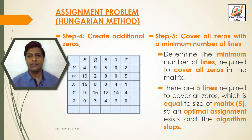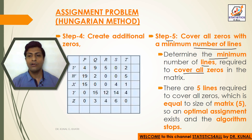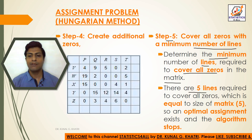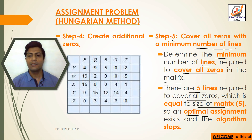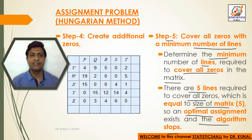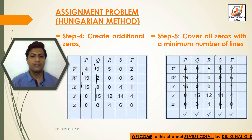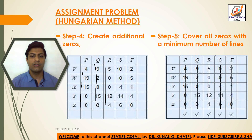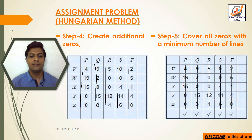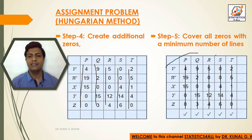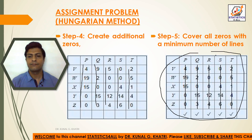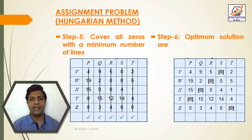Step 5: Cover all zeros with the minimum number of lines again. The minimum number of lines required to cover all zeros in the new matrix is 5, which equals the size of the matrix (5). Therefore, an optimal assignment exists and the algorithm stops. In the first column we cover 2 zeros, second column 1 zero, third column 2 zeros, fourth column 2 zeros, and fifth column 1 zero.